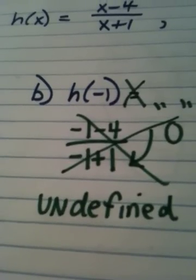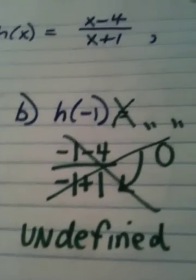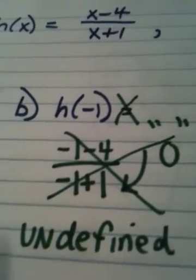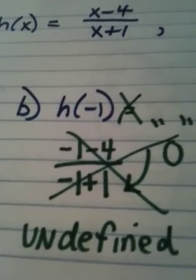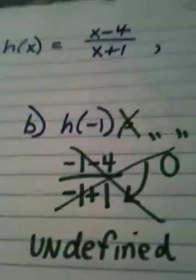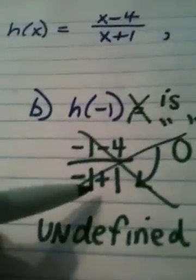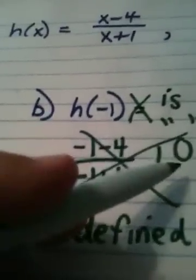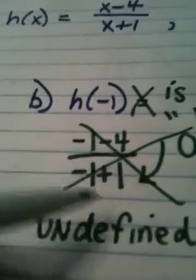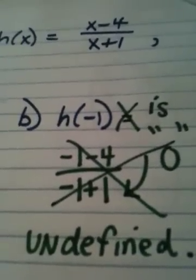So, the correct answer is, you could either say h of negative 1 does not exist, h of negative 1 is undefined. The best way to say it is, it's undefined. But definitely don't put equals, because it doesn't equal anything. h of negative 1 is undefined. Any time a denominator of a rational function becomes 0, dividing by 0, mathematically, you can't do it.